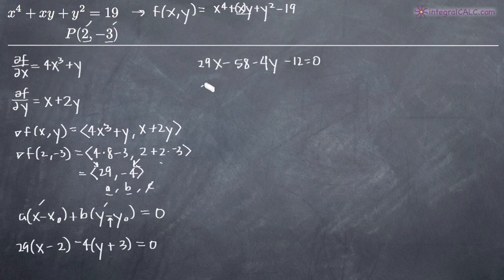And when we reorder these terms, we'll do the x term first. We'll get 29x minus 4y and then we would get minus 58 minus 12, which would give us a negative 70. But we like to move that to the right side. So we'll add 70 to both sides and end up with a positive 70 over here on the right. And this is our final answer.